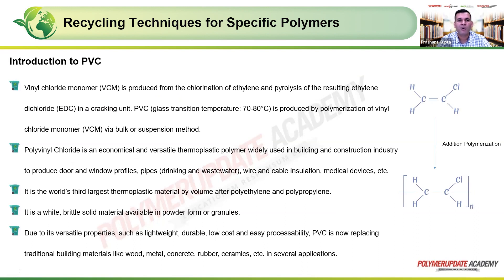Next is PVC (polyvinyl chloride). Vinyl chloride monomer is produced from the chlorination of ethylene and the pyrolysis of the resulting ethylene dichloride in a cracking unit. PVC has a glass transition temperature of around 70–80°C and is formed by polymerization of vinyl chloride monomer via bulk or suspension methods. PVC compounds are generally available in powdered form.